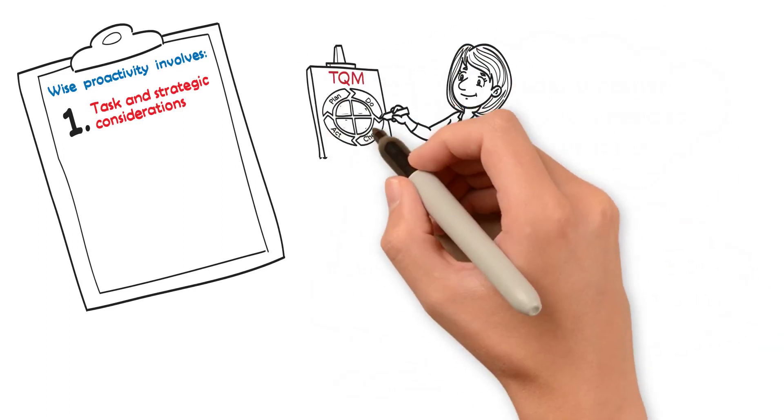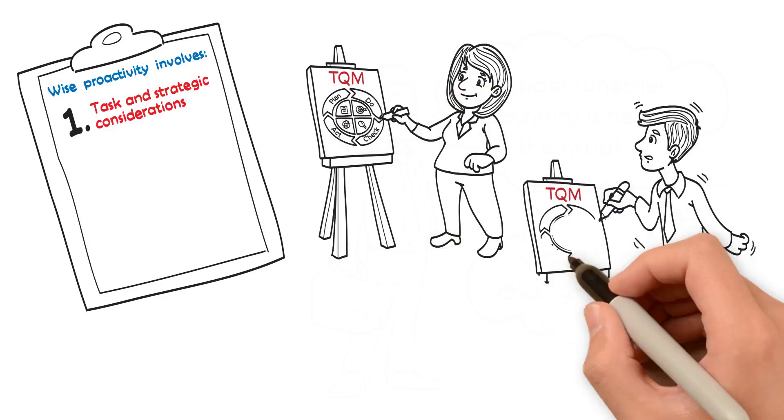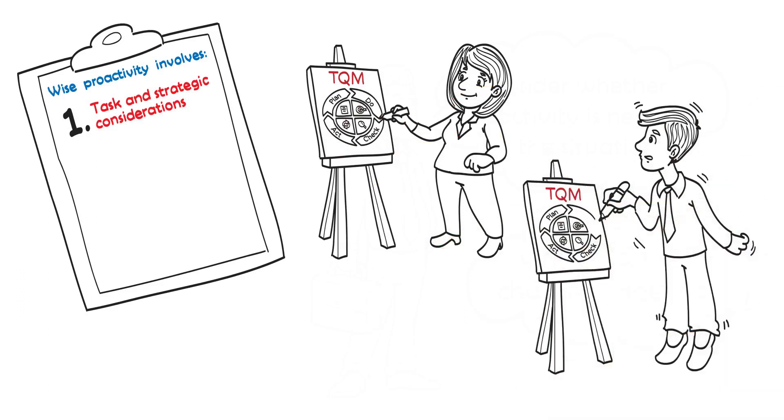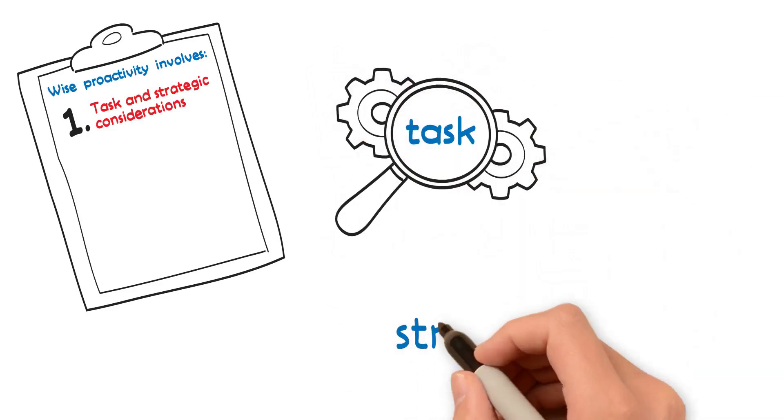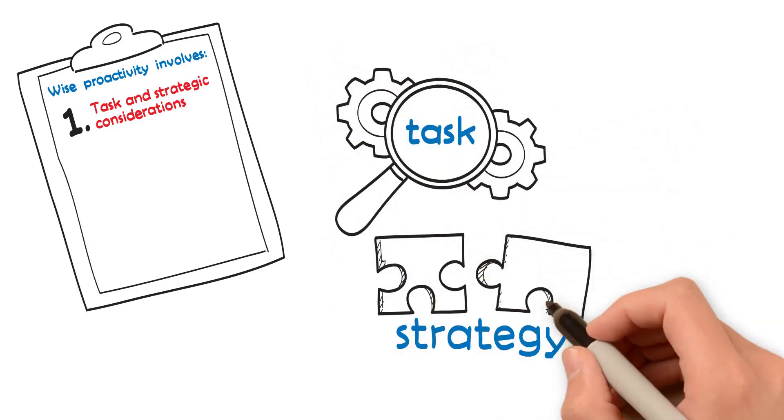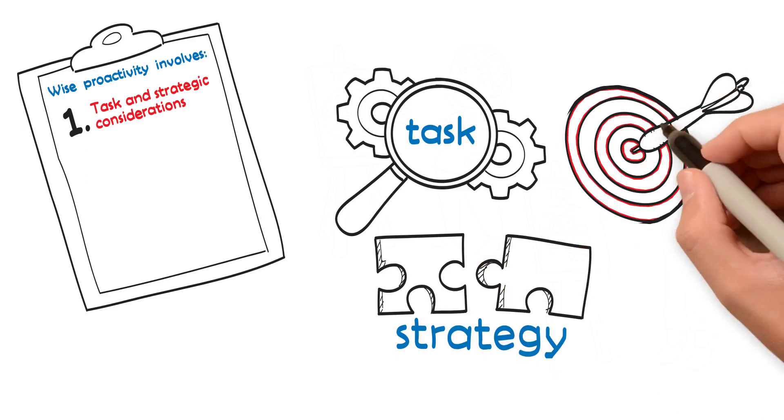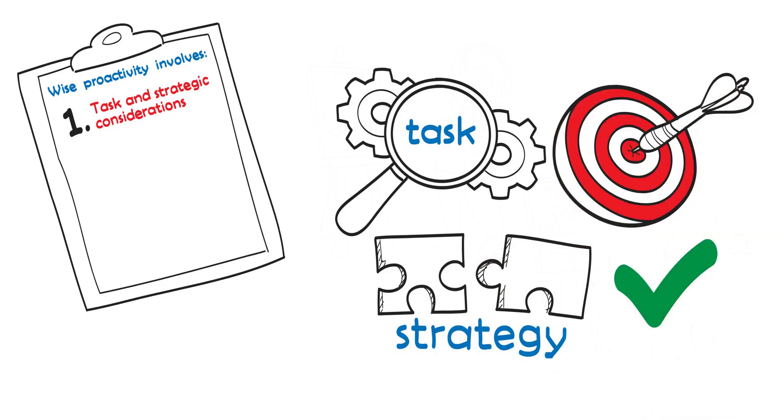There's no point, for instance, starting a new quality management system simply because other organizations are doing it. The more one's proactivity fits with the task and strategy of the team or the organization, the more likely it will achieve positive outcomes.